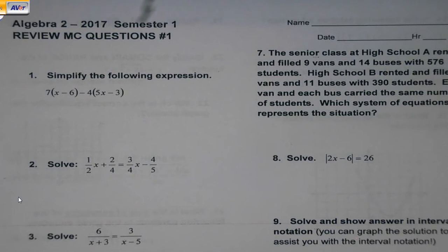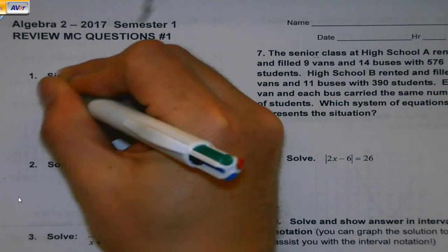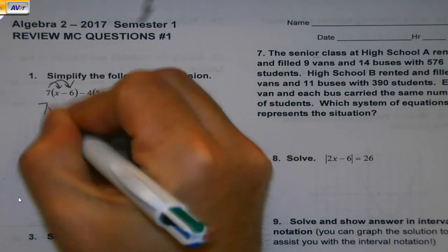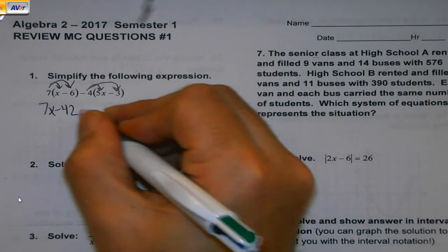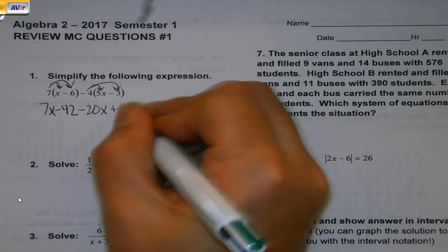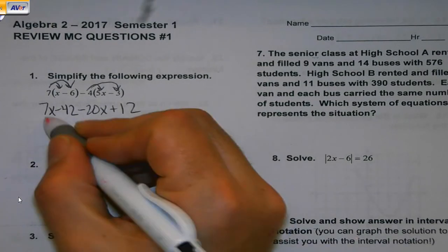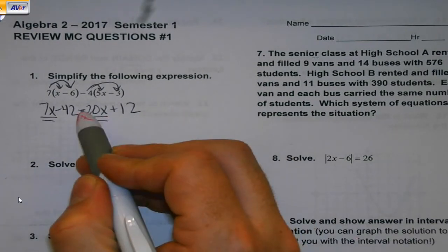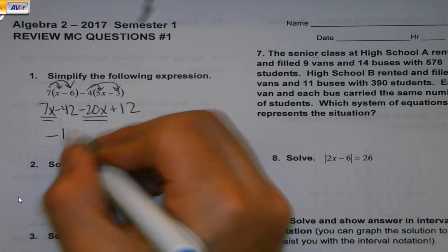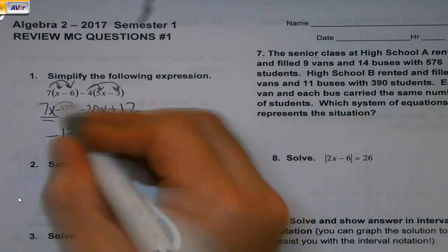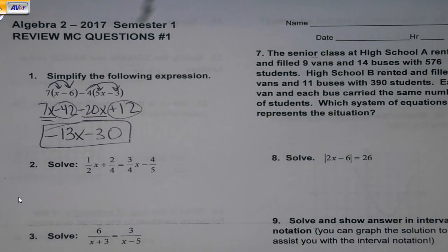Simplify the following expression. I notice there's a minus in the middle here. First thing I'm going to do is distribute. Then with this minus, I'm going to take that negative four and distribute that through, making sure I'm being careful with my signs. Once I've done that, I'm going to go looking for like terms. Pay attention to your signs. Negative forty-two plus twelve, and if in doubt, use your calculator. Thirty and I'm set.